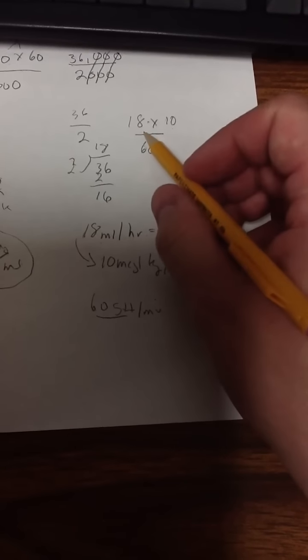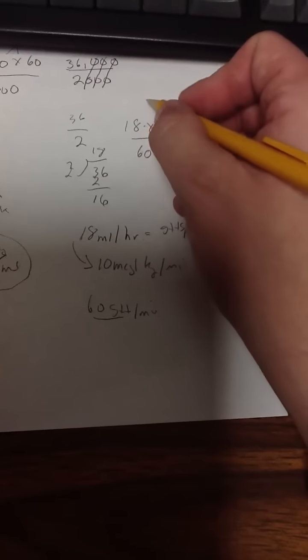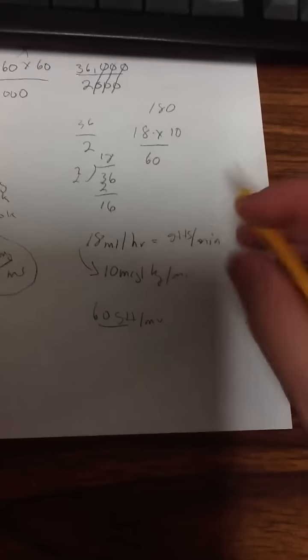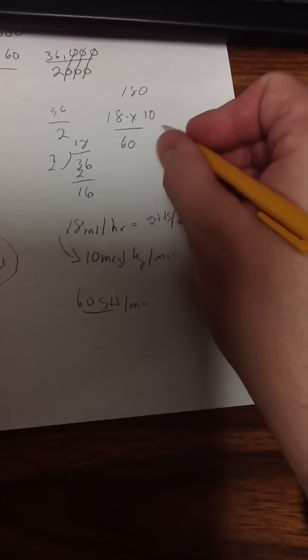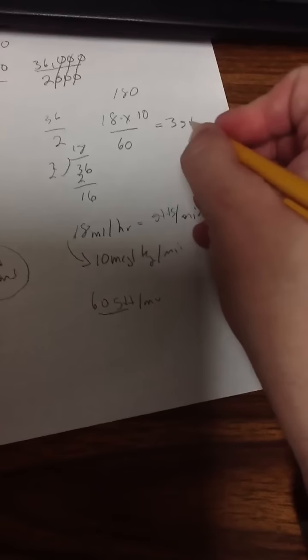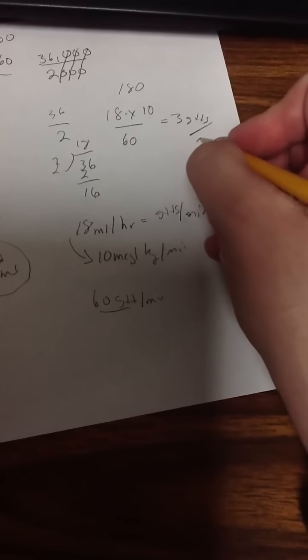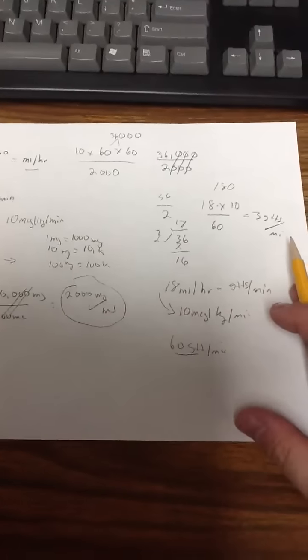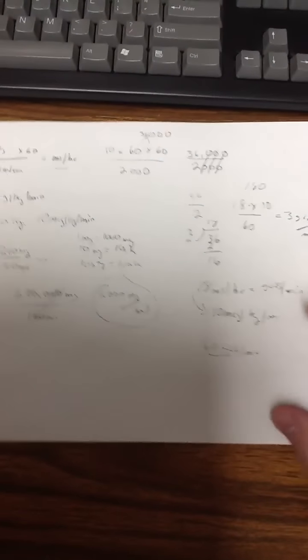So what's 18 times 10? Well, just add a 0. 180. 60 goes into 180 how many times? 3 times. 3 drops per minute if I had 10 drop per milliliter tubing. So it's very easy to work through these calculations knowing just a couple of essential formulas.